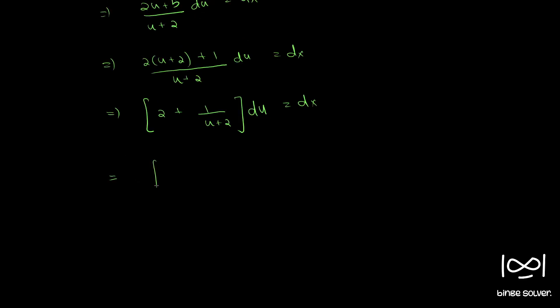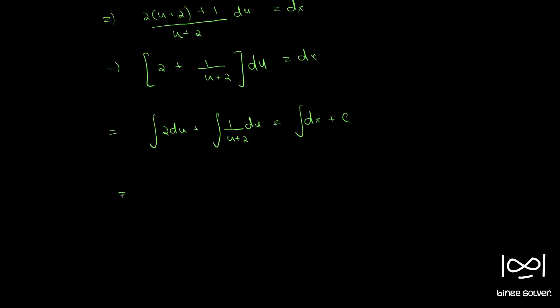Integrating both sides, we get 2 du plus integral 1 plus u plus 2 du equal to integral dx plus c. So, from equation 2, we get 2 into x minus y plus u plus 2, which is 2u plus log u plus 2 equal to dx plus c.